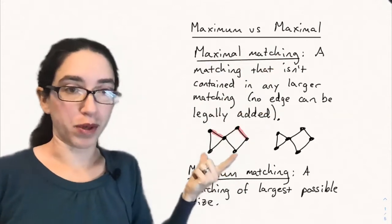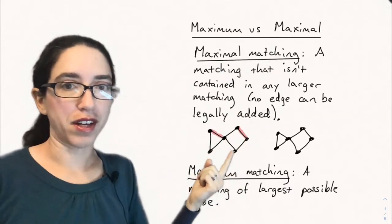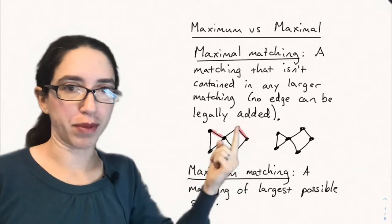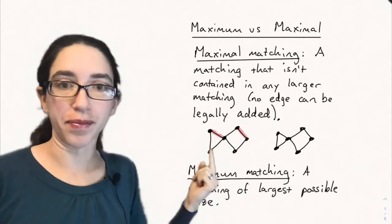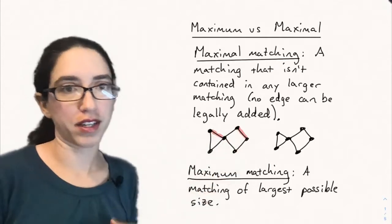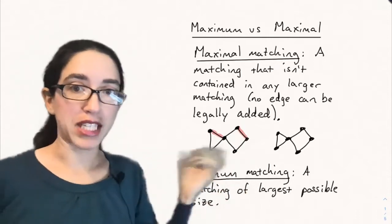Here's an example of a matching, the one we had before with two edges, where you actually can't add another edge into this matching. If I tried to add this black edge or this black edge, those all overlap with something that's already red. They all share a vertex with an edge that's already in the matching. So you can't extend it. So this is a maximal matching.